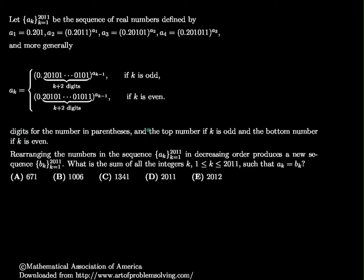And the top number if k is odd, the bottom number if k is even. Rearranging the numbers in the sequence in decreasing order, and this is something that I missed the first time I read through the problem, produces a new sequence b_k as k goes from 1 to 2011. What is the sum of all the integers k, as 1 is less than or equal to k is less than or equal to 2011?